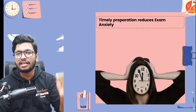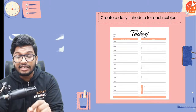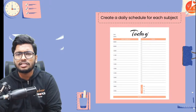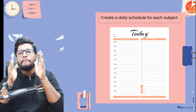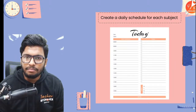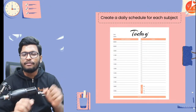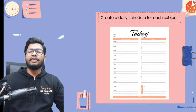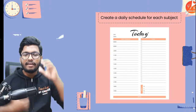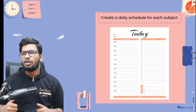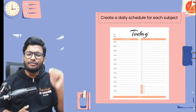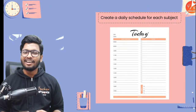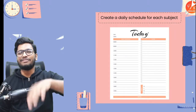The second tip is: create a daily schedule — not just for physics, but for every single subject. Physics, chemistry, bio, math, English, social science, Hindi, Kannada, whatever your second language is — make sure you've created a daily schedule. You should have something like one hour for physics, one hour for chemistry, one hour for biology. Your day should be properly planned. It should not be 'I feel like studying this today, so I'll study that' — because when you do that, you end up not studying consistently.